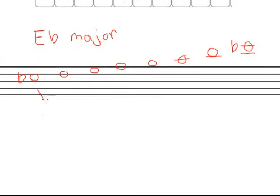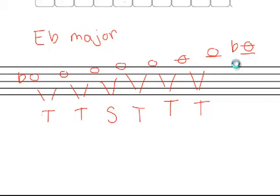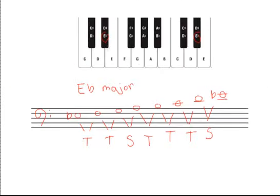So let's draw in our interval pattern again — remembering that this is the interval pattern of what should be happening, not what is currently between the notes. We'll have to change these notes to make sure our interval pattern is correct. So: tone, tone, semitone, tone, tone, tone, semitone. E-flat going up a tone takes us to an F. That's great — we don't have to do anything. Our next interval is a tone again, going up from an F.